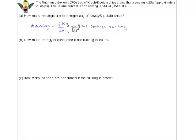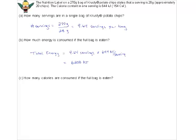Period one of the game is over - you eat a few handfuls of chips. Period two is exciting - another couple handfuls. Period three - you look in the bag and all the chips are gone. You've consumed the full bag. If one serving has 644 kilojoules, and you've eaten 9.6 servings, the total energy consumed = 9.6 × 644 ≈ 6,208 kilojoules. That's a lot.